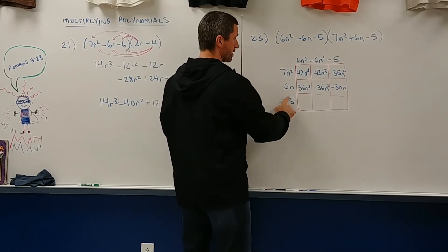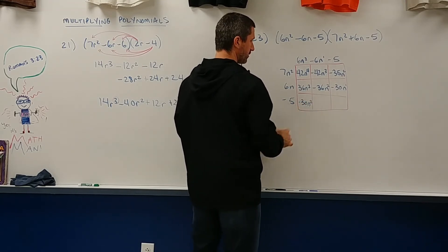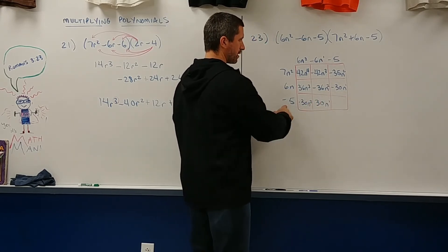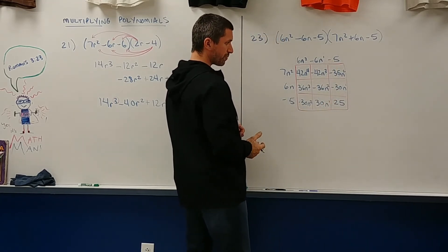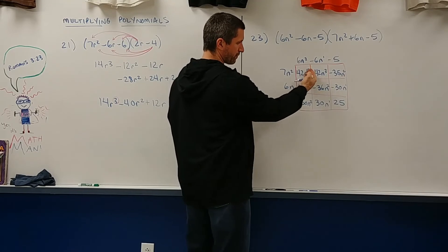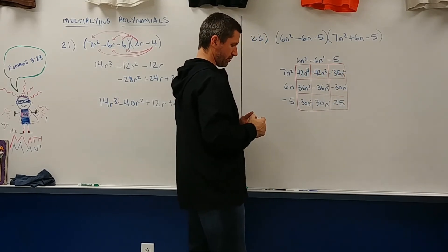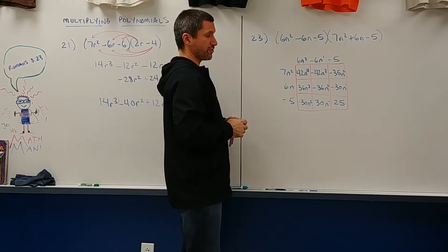Alright, last row. Negative 5 times 6n squared is negative 30n squared. Negative 5 times negative 6 is positive 30 with an n. That's n to the first. And negative times negative is positive. We've got 25 right there. And notice the powers are also descending. Going down: 4, 3, 2, then 3, 2, 1, then 2, 1, degree 0.